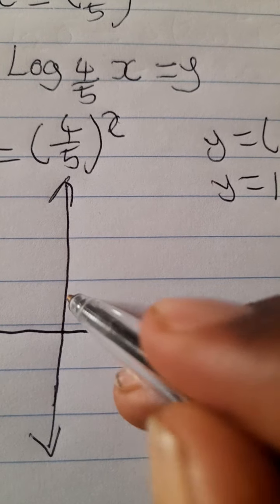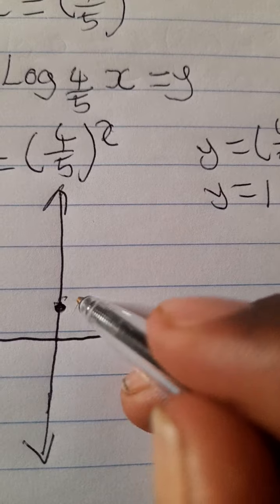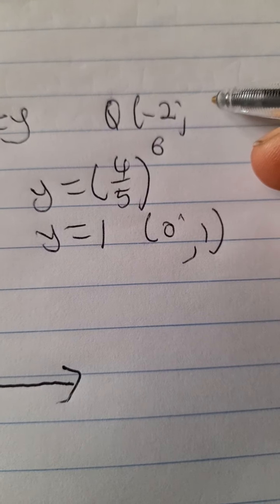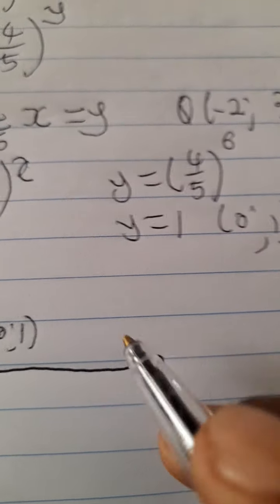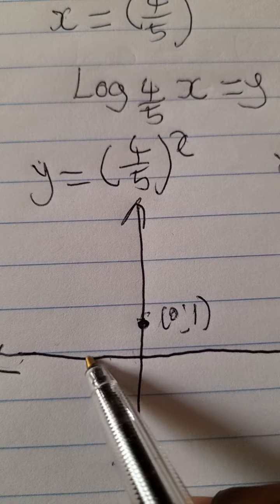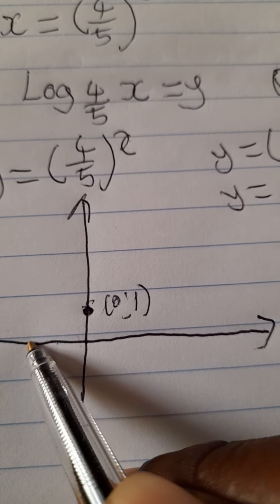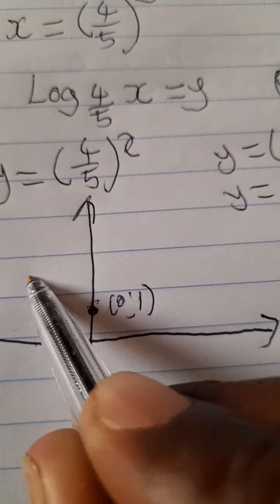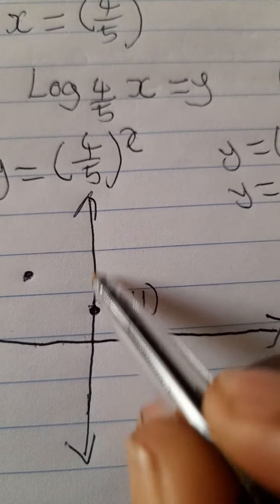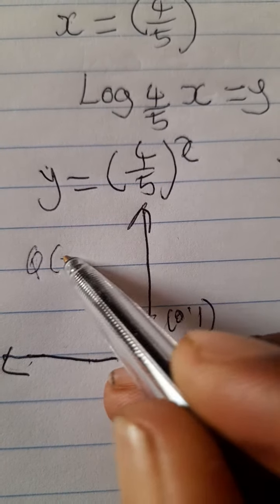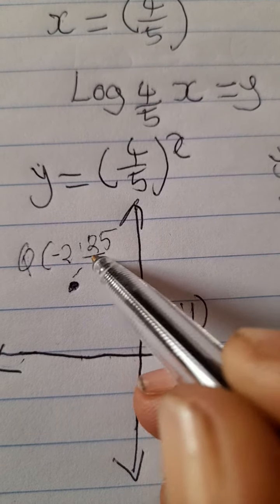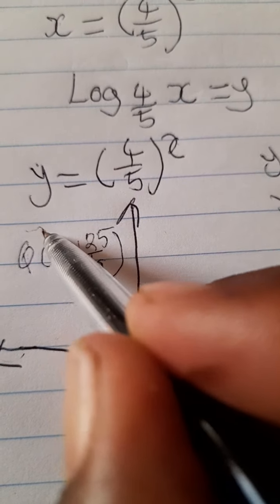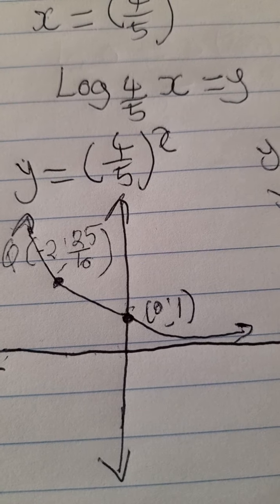We place coordinate (0, 1) on the graph. We also have the coordinate of Q, which was given as negative 2 and 25 over 16. Note that 25 over 16 is the same as 1.5-something — it falls between 1 and 2 on the y-axis. So we place Q at approximately (negative 2, 1.5625) on the sketch, and then draw the exponential curve through these points.